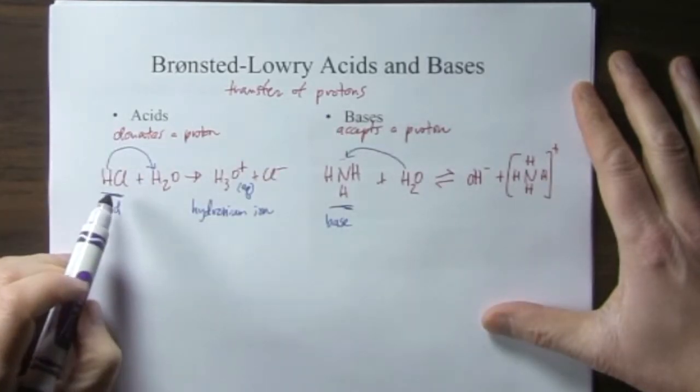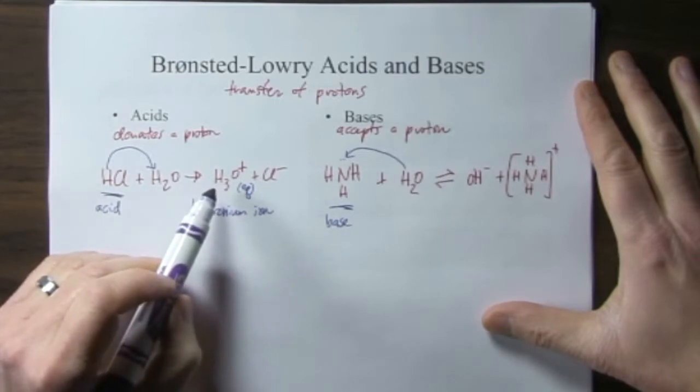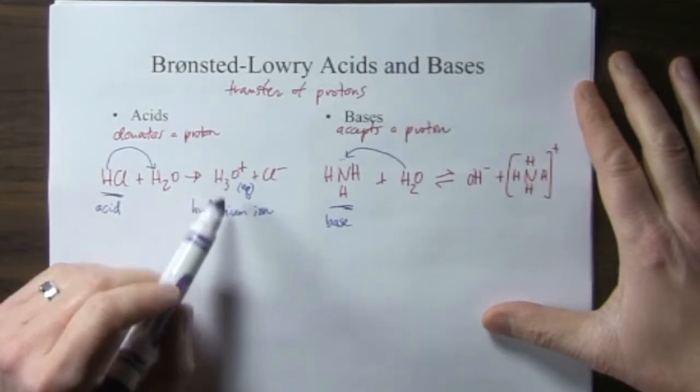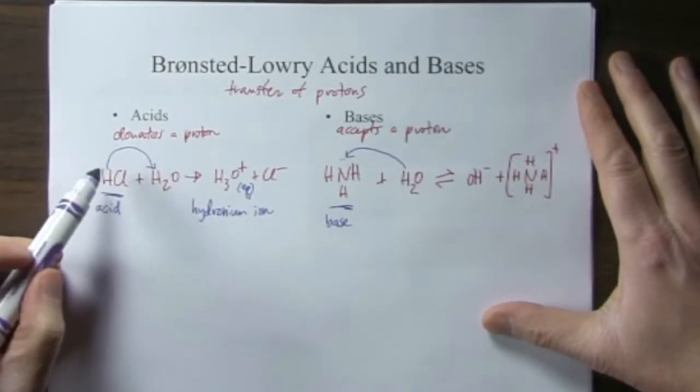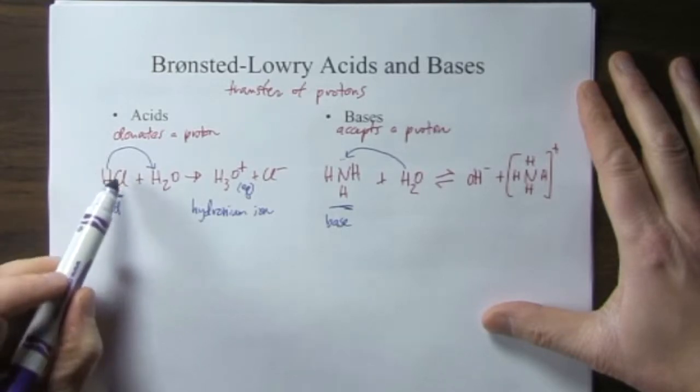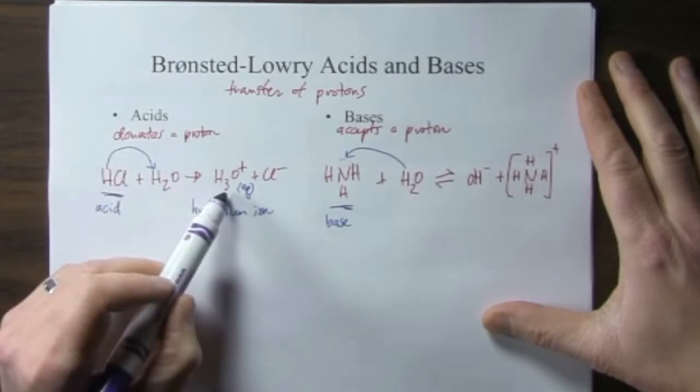So we saw with the Arrhenius definition that hydrochloric acid in water makes hydrogen protons. Those protons, we saw, are actually bound to a water molecule. So we can see that the Bronsted-Lowry definition would say that HCl is an acid because it donates its proton to a water to make the hydronium.